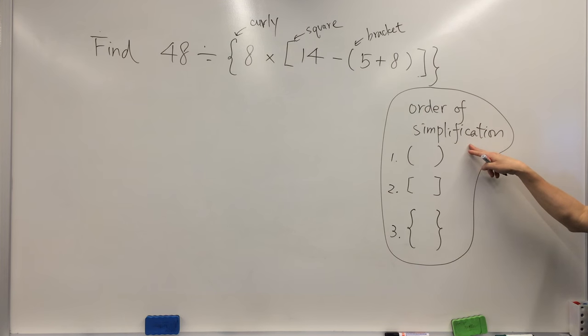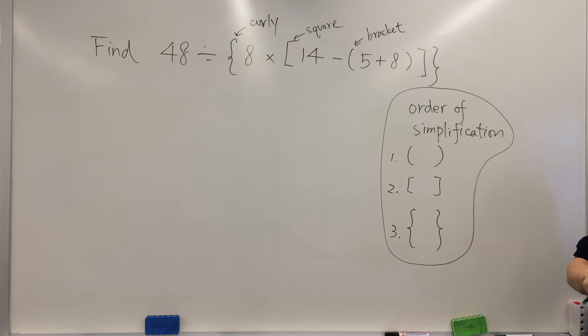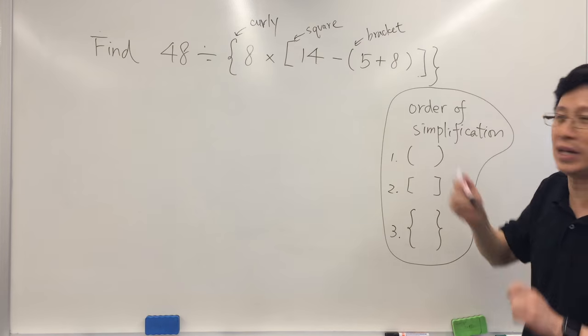We have to start from this bracket first. So this is our order of simplification: we start with the normal bracket, then we move on to the square bracket, and finally the curly bracket.